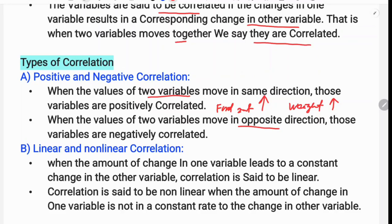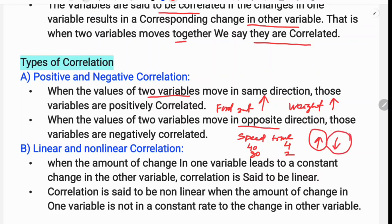When variables move in opposite directions, they are negatively correlated. For example, speed and time are negatively correlated — as speed increases, the time taken decreases. So speed and time are said to be negatively correlated, moving in the negative direction.